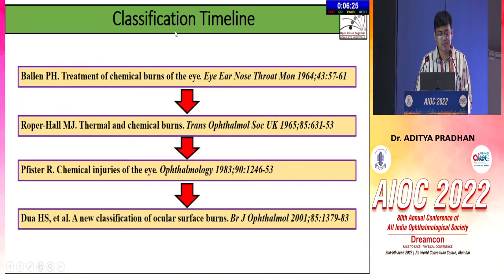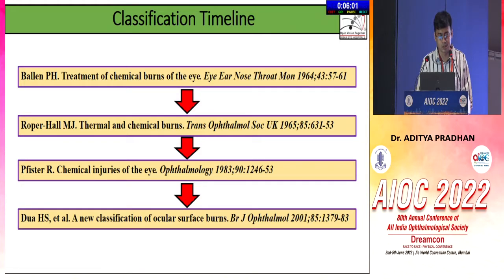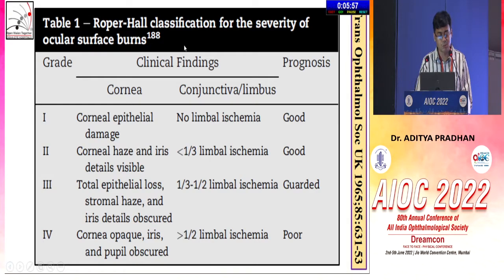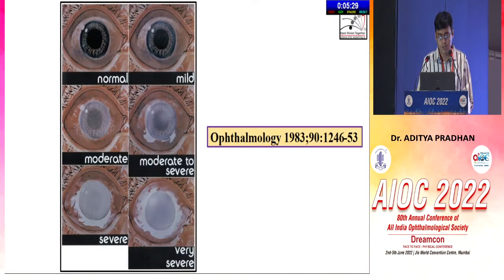Looking at classification of ocular burns: Balen introduced the first classification in 1964. Roper and Hall modified this Balen's classification, which was widely used for decades, until the Dua classification, which is currently the most widely accepted. The Roper Hall classification has four grades assessing corneal damage and conjunctival or limbus involvement. As grades increase, prognosis worsens. In grade 1 there is just mild epithelial damage with intact limbus and conjunctiva. In grades 3 and 4, the entire cornea is damaged and more than six clock hours of limbus or conjunctiva show ischemia.